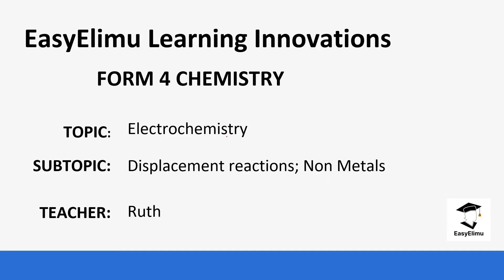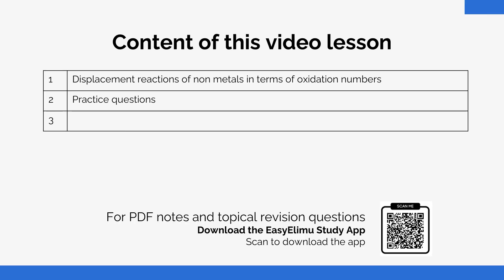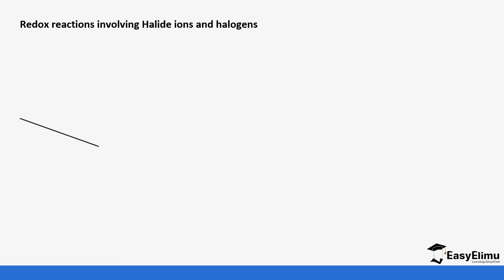Welcome to EZLM Learning Simplified. My name is Ruth and today we're going to be looking at the topic electrochemistry. We are going to look at the displacement reactions of non-metals. In the previous lesson we looked at the displacement reaction of metals, so you'll notice a slight difference in terms of oxidation numbers. We'll see examples of these displacement reactions, discuss why they behave in that manner, and compare the displacement reactions of metals and non-metals — which is very important when we go to the electrochemical cell.